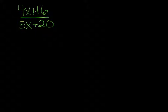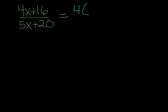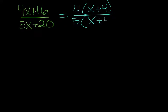Simplify 4x plus 16 over 5x plus 20. The rule says to factor first. For 4x plus 16, both have a 4 in common. Factor out that 4, and we have x plus 4, because 16 is 4 times 4. Then 5x plus 20 have a 5 in common. Take out the 5, and we have x plus 4, because 5 times 4 is 20. Now that we have matching groups, we can cross them out. Our final answer is 4 over 5.